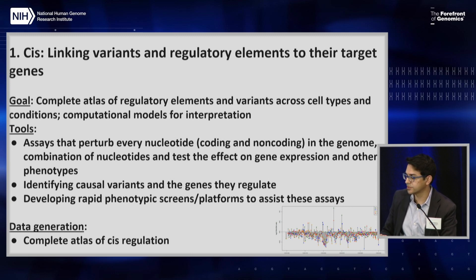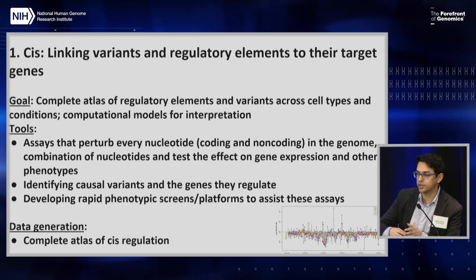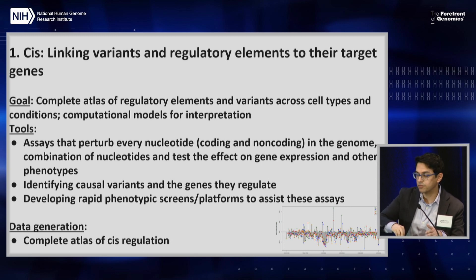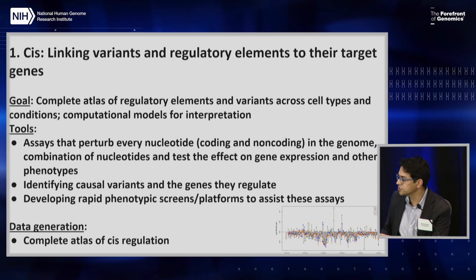The idea is not just to perturb every single nucleotide, but we can also think about more focused assays looking at sets of variants, trying to identify causal variants out of a confidence set from GWAS, and then trying to say — once we identify a variant that seems to have some effect — what gene is it working through? There are many elegant examples where it isn't working through the nearest gene.